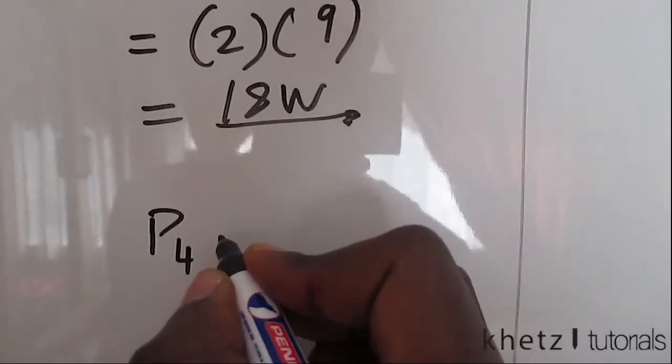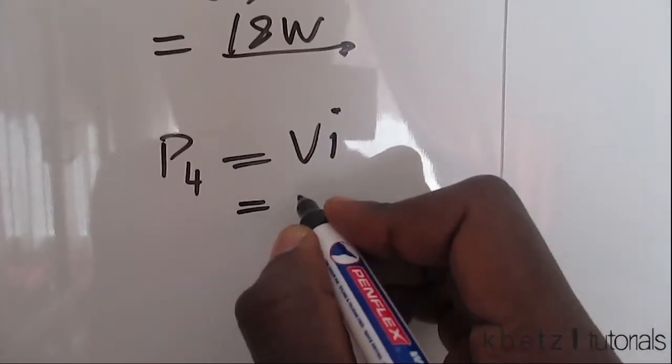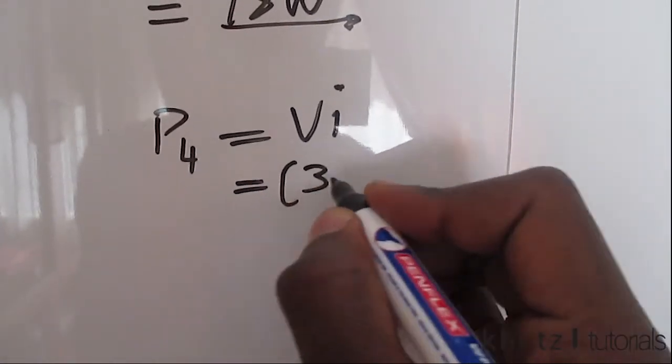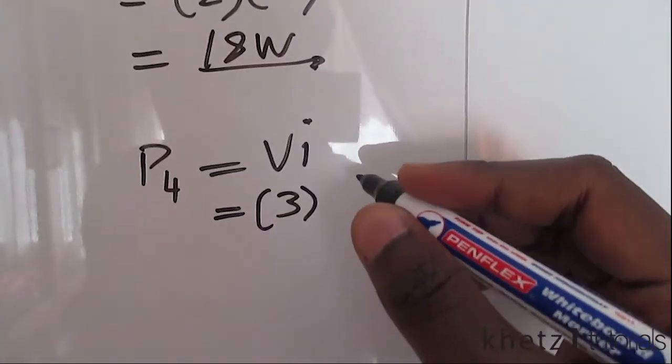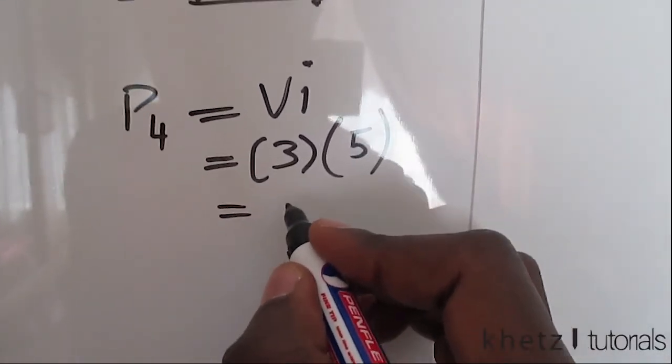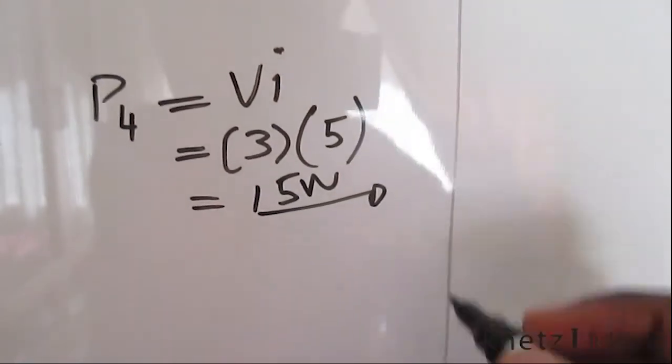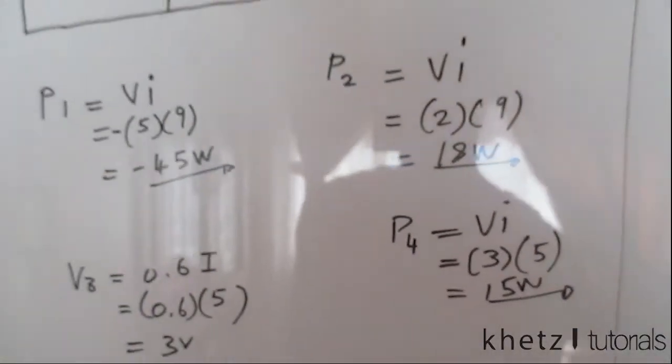VI equals to the voltage given to us is 3, and the current given to us is 5, which should be 15 watts. And that is how you answer this question.